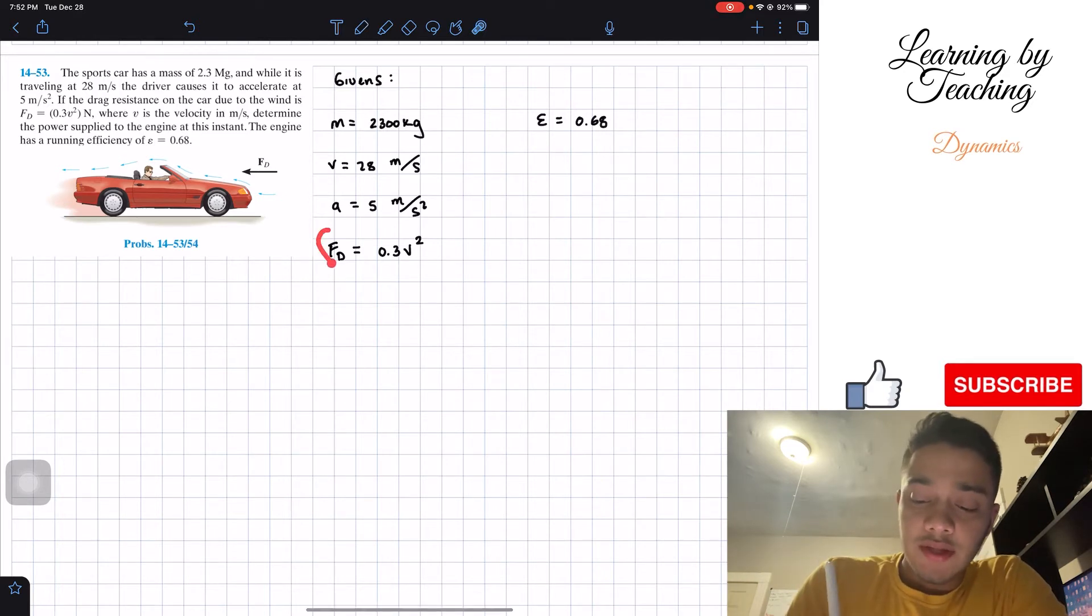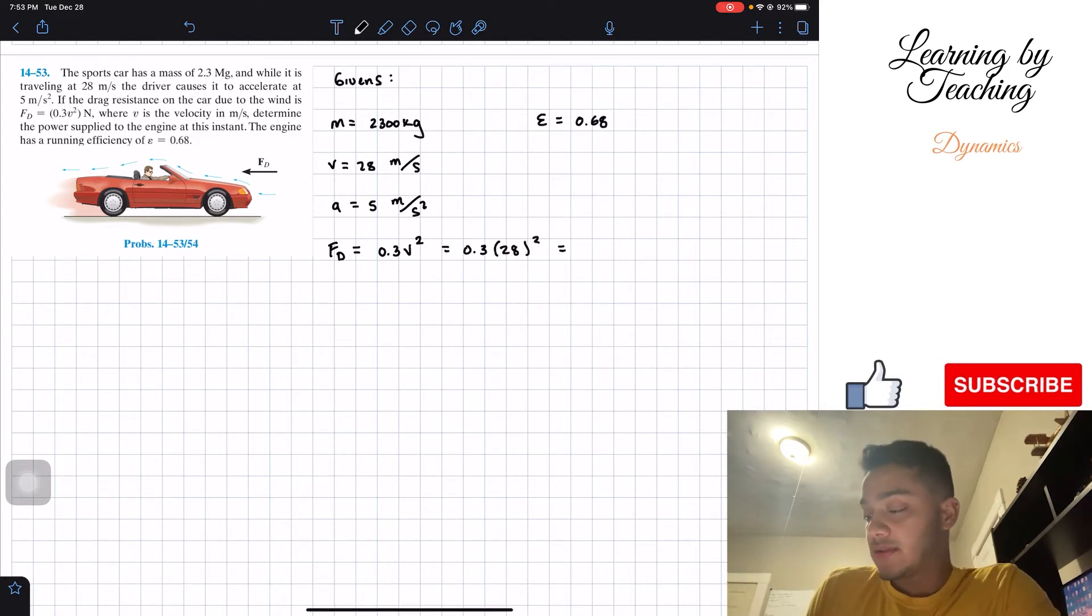Now let's take a look at this dragging force, 0.3 v squared, but we already have our velocity. Therefore at this moment if we plug in, the dragging force is 0.3 times 28 squared, which gives me 235.2 newtons.